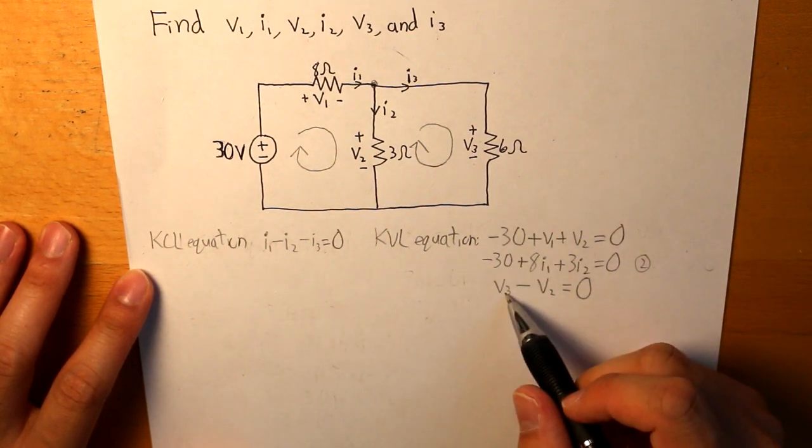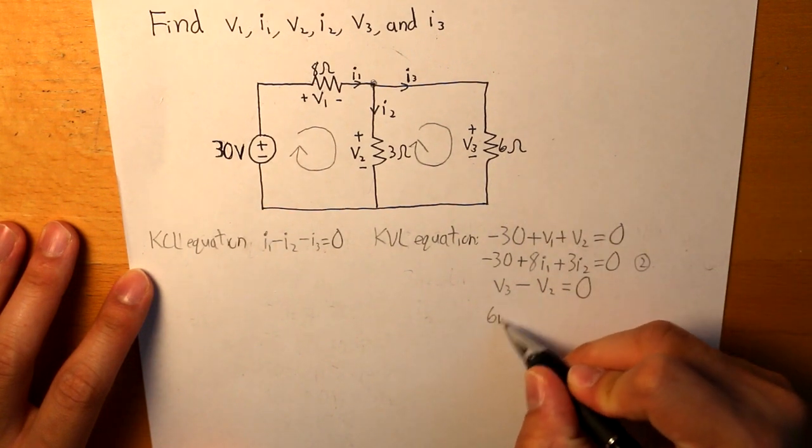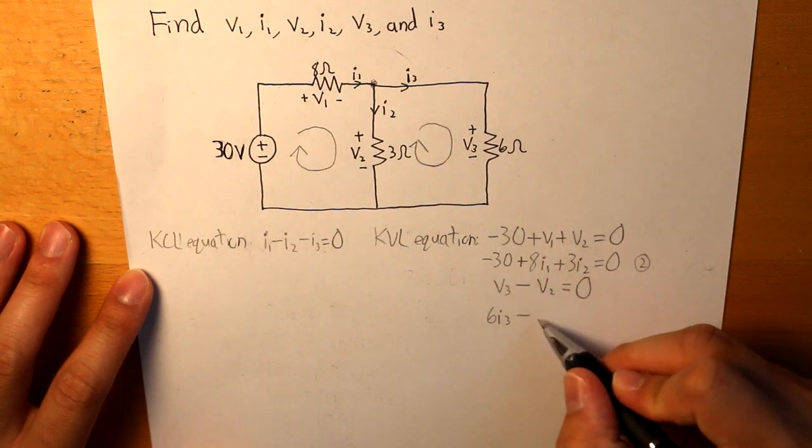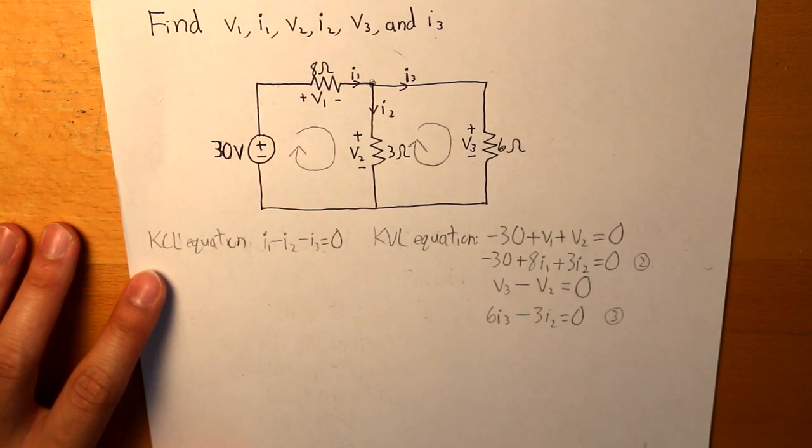And then V3 is equal to 6 times I3. And then the same thing for V2, which is 3I2. And that goes to our third equation.